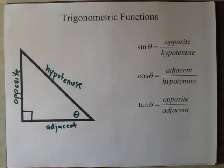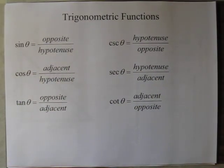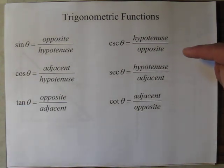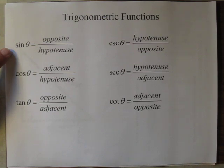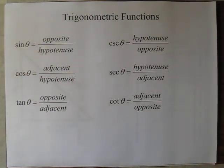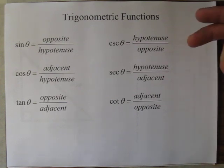Other than these three trigonometric functions, there are three more. We have the three we learned about — sine, cosine, and tangent — and here are the new ones: cosecant, secant, and cotangent. If you look at these closely, you may notice a relationship between sine and cosecant, between cosine and secant, and between tangent and cotangent. They're reciprocals of each other, meaning cosecant is just a flipped-over fraction of what sine is.